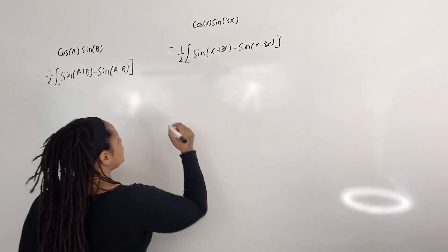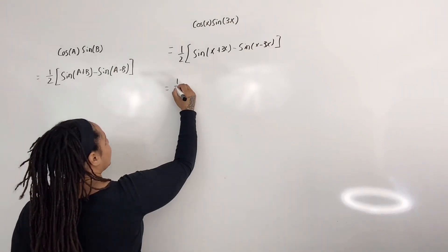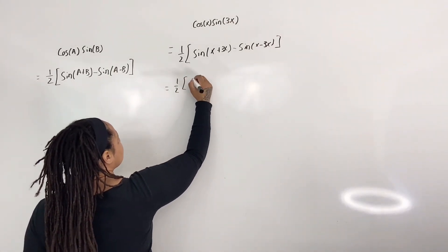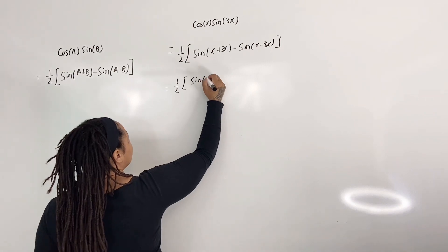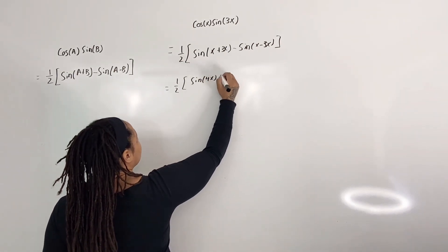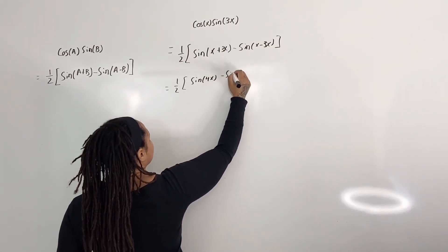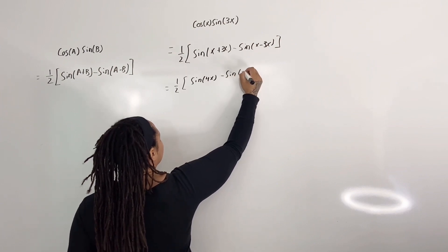So this is equal to one-half times sine of 4x minus sine of negative 2x.